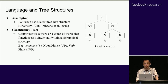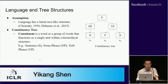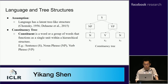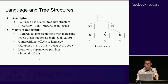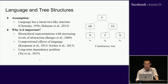Our work is based on a widely accepted assumption that natural language has a latent tree-like structure. It could be a constituency tree or some other formalism. In this work, we focus on the constituency tree. Each constituent is a sequence of words that functions as a single unit to represent a meaning, and a constituent tree is constructed based on the relation between those constituents. This tree structure is important because it provides a natural way to compute hierarchical representations with increasing levels of abstraction, which is one of the key intuitions behind the success of deep learning.